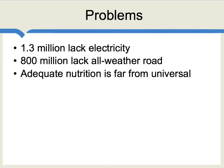One thing that's clear is that there are still a lot of major economic problems in the world. According to estimates, 1.3 million people lack electricity, 800 million people lack an all-weather road, and adequate nutrition is far from universal. So there are many problems which require solutions. Those solutions will involve economic growth, and that economic growth will, in some ways, bring more pressure on the environment. Still, the human problems are considered truly pressing.